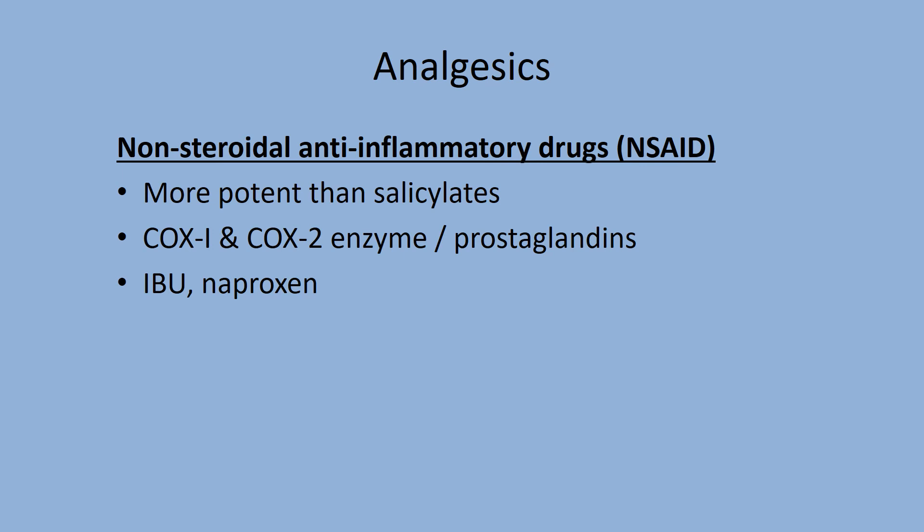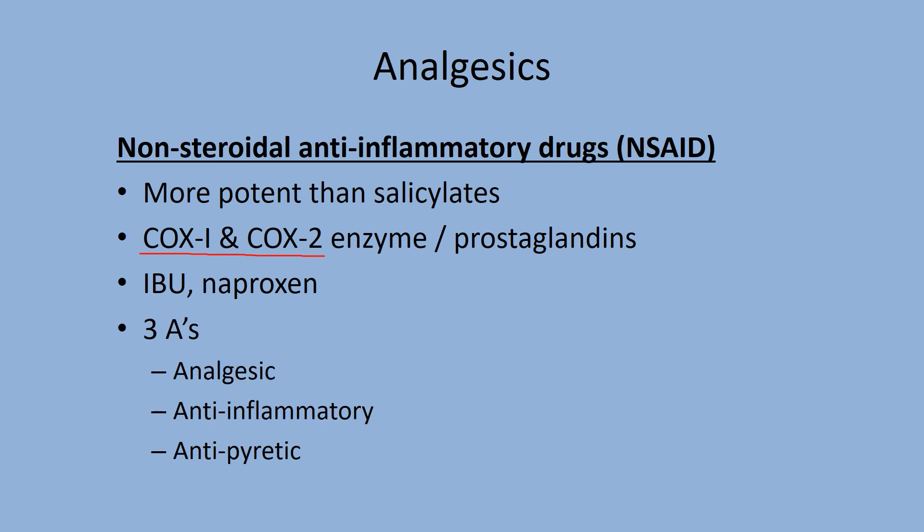Non-steroidal anti-inflammatory drugs — NSAIDs — are not steroids. We're talking about corticosteroids here, not anabolic steroids — specifically, corticosteroids from your adrenal cortex that help reduce inflammation. NSAIDs work on the COX enzyme. Certain NSAIDs can specifically target COX-1 or COX-2, hopefully leading to fewer side effects, by working on the production of prostaglandins. Common examples include ibuprofen and naproxen. They have all three A properties — pain relief, inflammation relief, and fever relief — because they work at the site of pain on the COX enzyme.